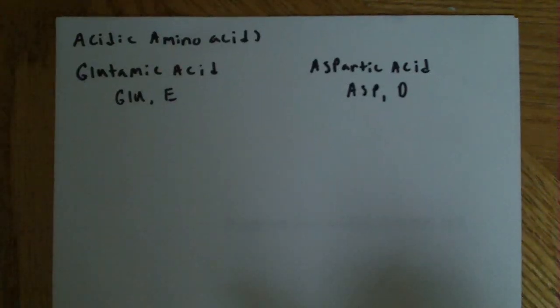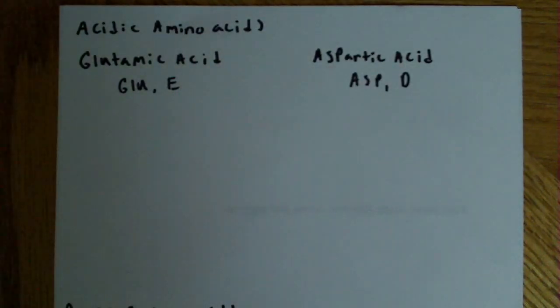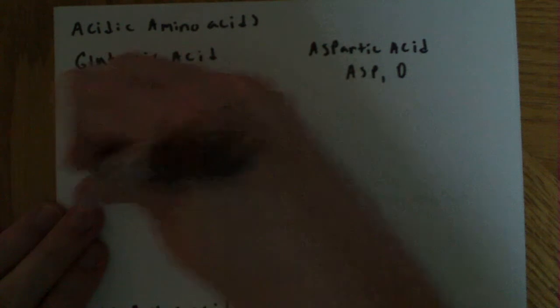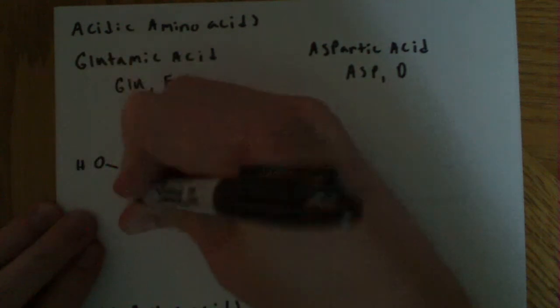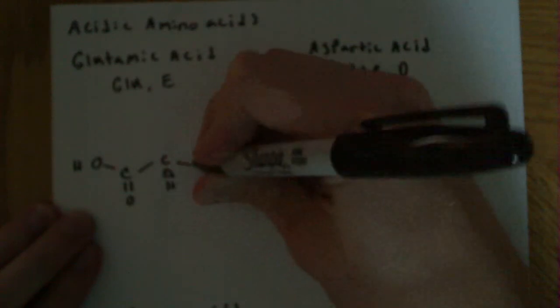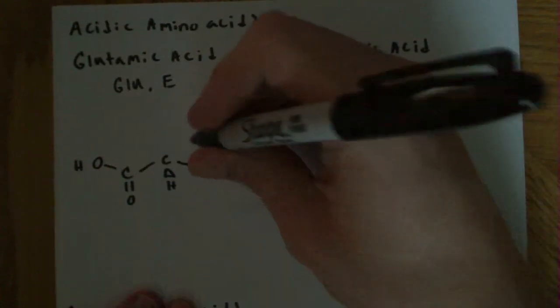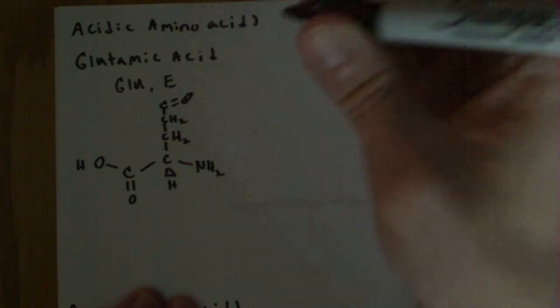So here I have the acidic amino acids. They're glutamic acid and aspartic acid. And I didn't draw them out, so what I'm actually going to do is just draw them real quick for you guys. So again, we start out with our backbone. And if we're looking to do glutamic acid here, the side chain is CH2, CH2, C double bond O, OH.